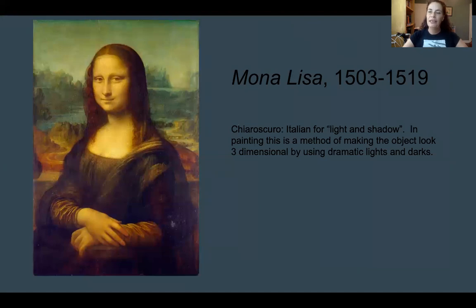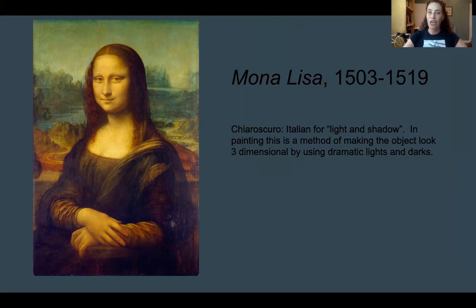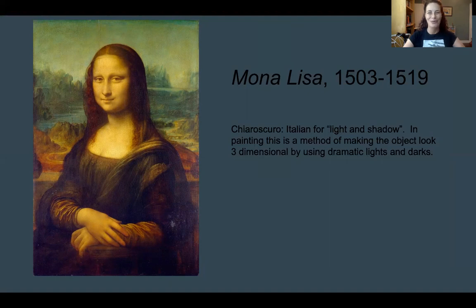This idea has a name, and it's called Chiaroscuro. Chiaroscuro is Italian. 'Chiaro' is light, 'scuro' is shadow. It just means using light and shadow to make a figure look three-dimensional. And again, this is one of da Vinci's main contributions — shown in probably his most famous painting, the Mona Lisa.